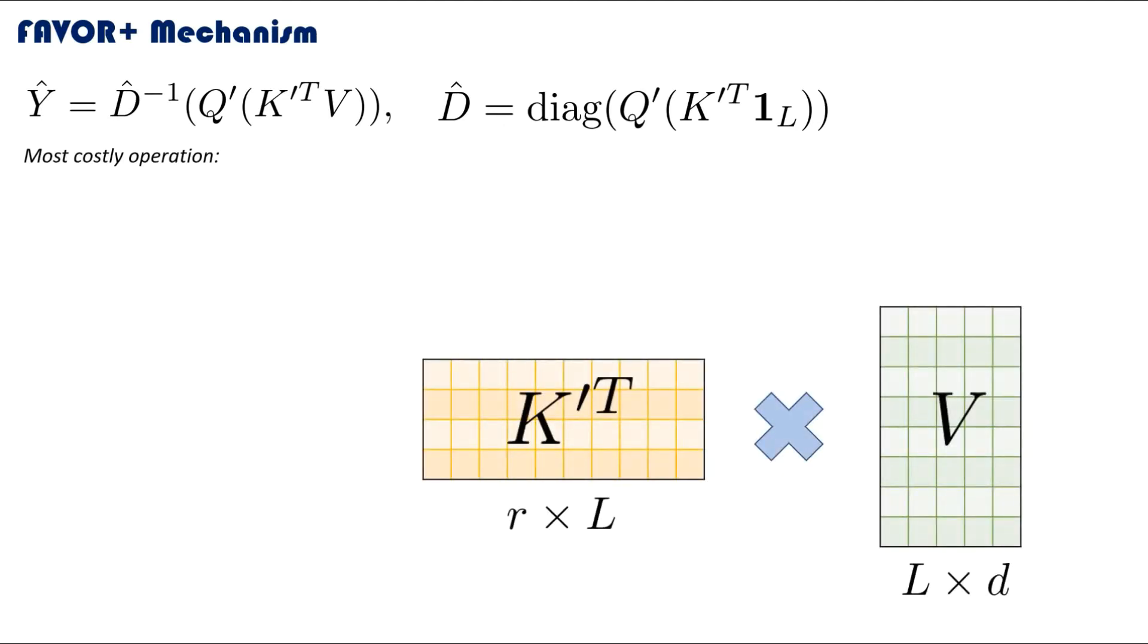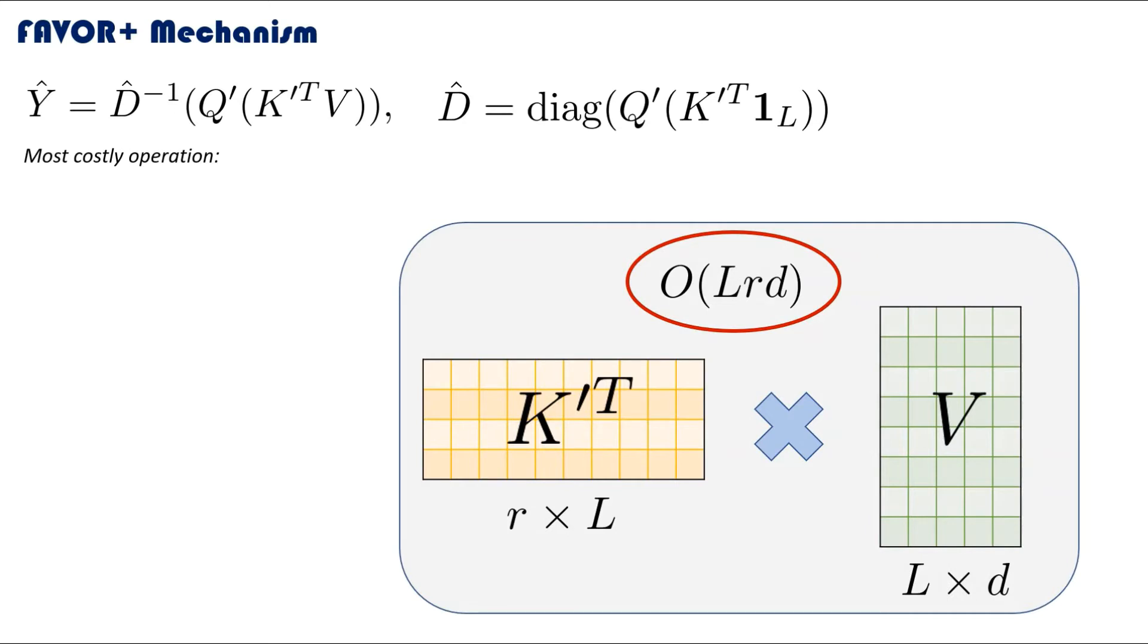As we did before with the traditional attention mechanism, let's find the most costly operation in this approximate attention mechanism. That would first be K dash multiplied by V, that of course has an order of complexity of L times r times d. But this resultant matrix is post-multiplied by Q dash, which also has an order of complexity of L times r times d.